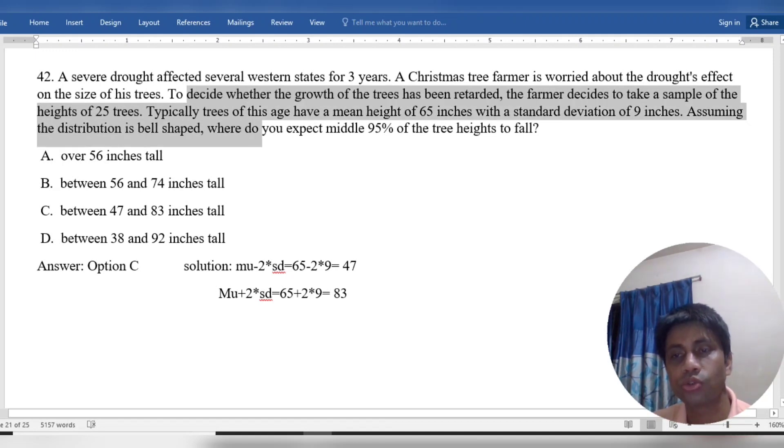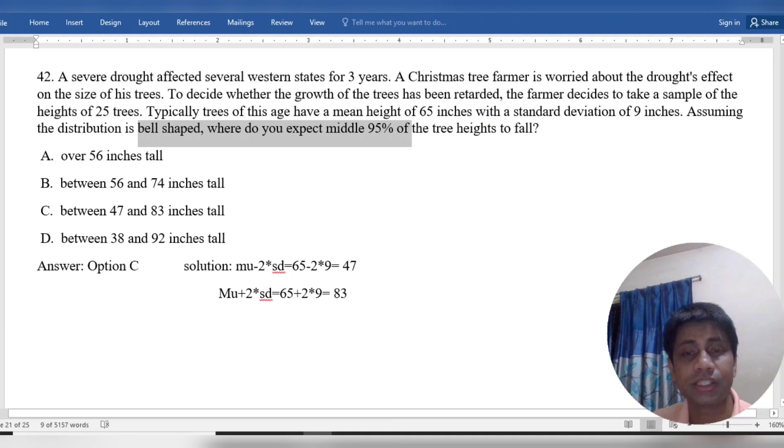The farmer took a sample of 25 trees with a mean height of 65 inches and a standard deviation of 9 inches. We need to find where the middle 65% of tree heights fall.